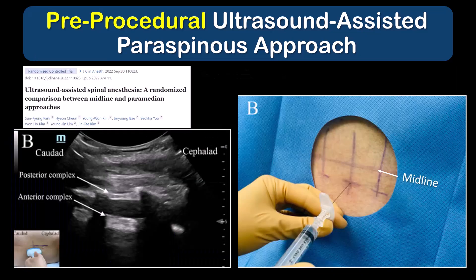Now, this is not actually how the pre-procedural ultrasound-assisted technique is described in most studies in the literature. Using this Korean paper as an example, we see that while most investigators also identify the paramedian intervertebral spaces with a PSO view, they then mark the middle of the short edge of the probe together with the middle of the long edge of the probe where the space is, and then insert the needle at the intersection of these marks.